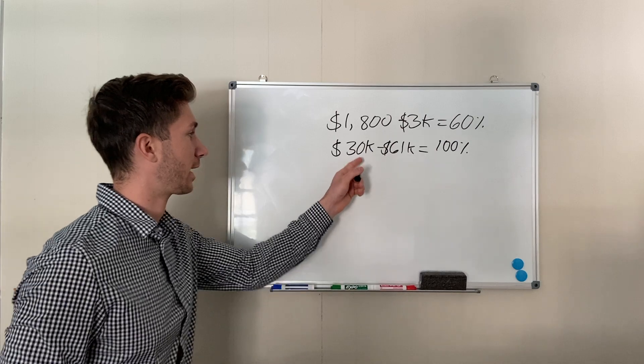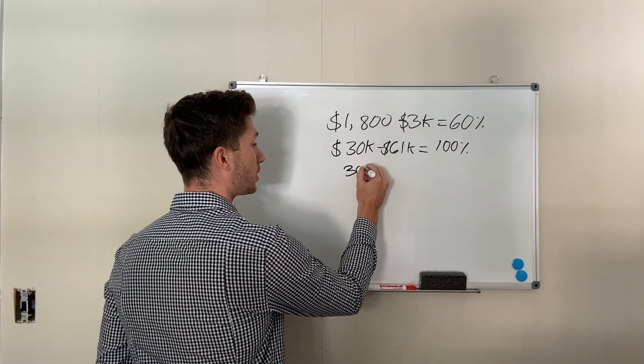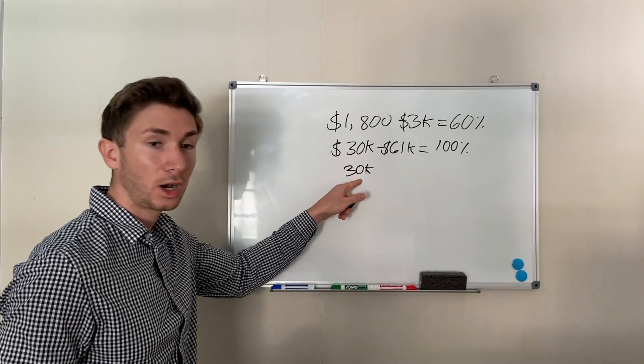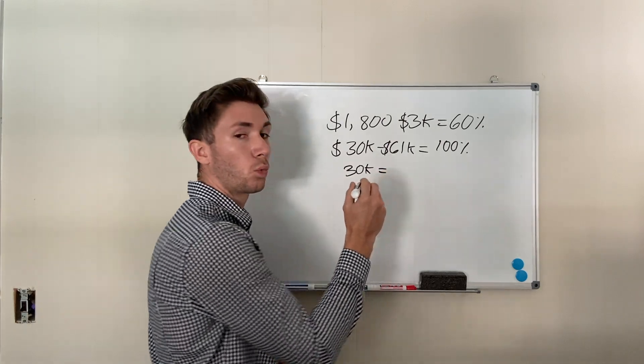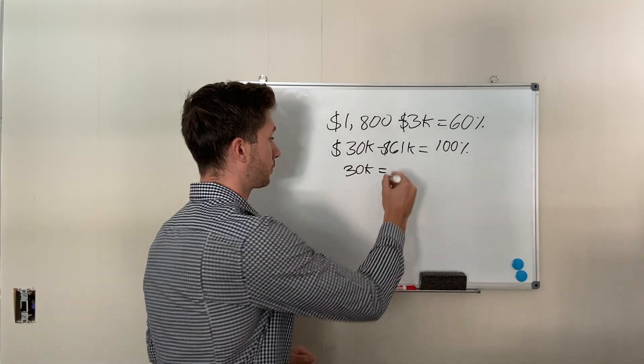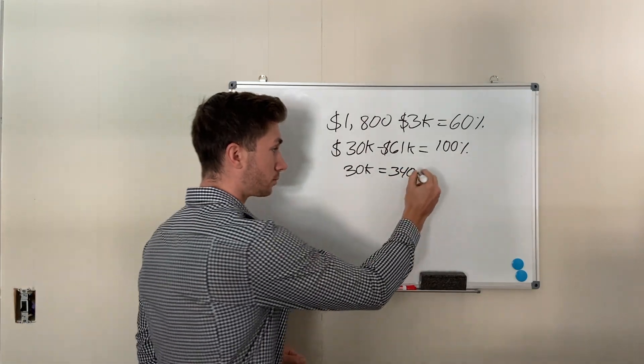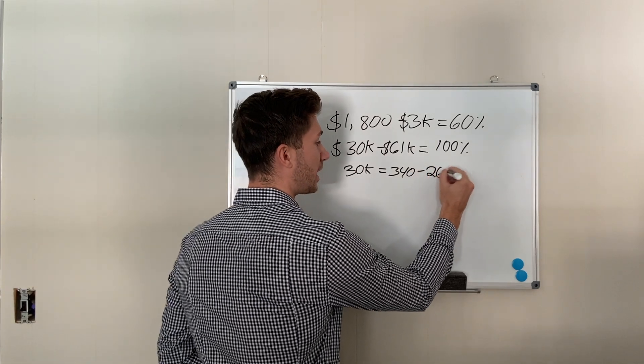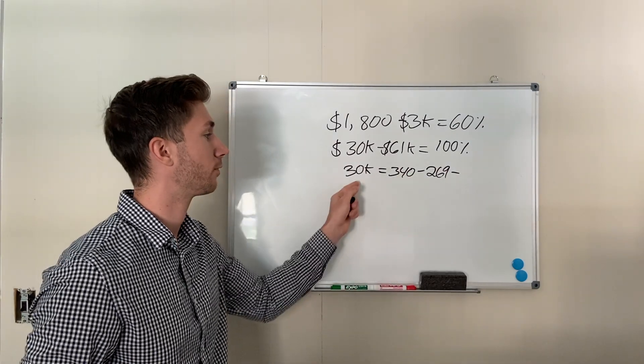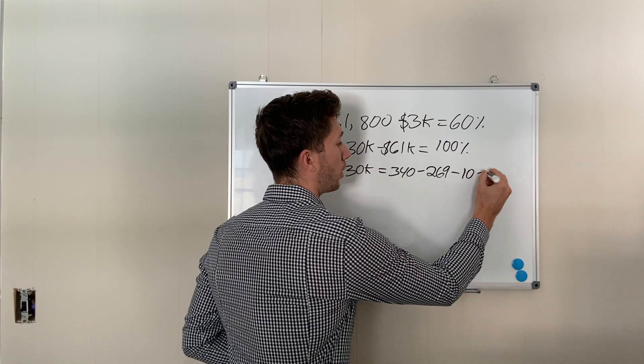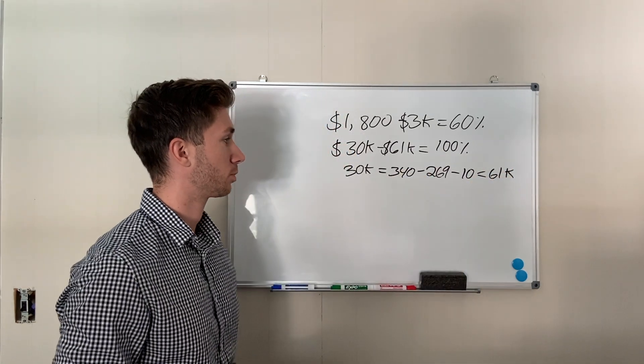So let me show you really quick how I got that sixty-one thousand dollars in real estate. I put thirty thousand dollars down. This also includes my closing costs and some money for fixing up the property. The property that I bought was worth three hundred forty thousand dollars after I fixed it up. But I didn't pay three hundred forty thousand dollars for it. I bought it for two hundred seventy-seven thousand dollars. So that means I had a loan of two hundred sixty-nine thousand dollars on it. And I had to actually end up borrowing an extra ten thousand dollars in order to finish fixing up this property. So that left me with sixty-one thousand dollars, which is one hundred percent return on my money.